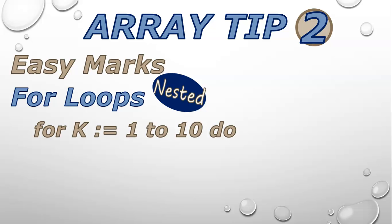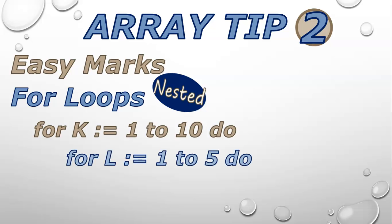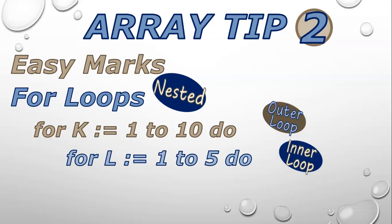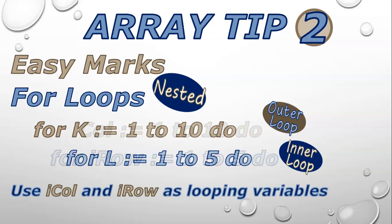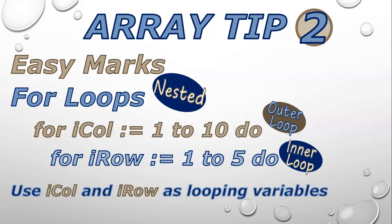You're going to loop from 1 to 10, for example, and from 1 to 5, where one value is your outer loop and one is your inner loop. There are always going to be two loops if you've got a 2D array. And if you get confused about using K and L as variables, you could use R_col and R_row as your looping variables to make it a bit clearer.